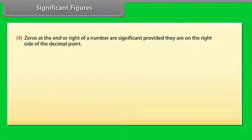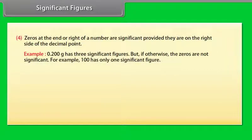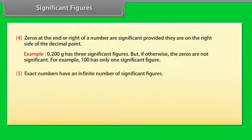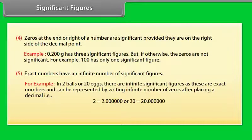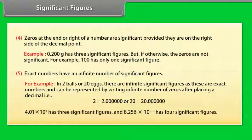Zeros at the end or right of a number are significant provided they are on the right side of the decimal point. Example: 0.200 gram has three significant figures. But if otherwise, the zeros are not significant. For example, 100 has only one significant figure. Exact numbers have an infinite number of significant figures. For example, in two balls or 20 eggs, there are infinite significant figures as these are exact numbers and can be represented by writing infinite number of zeros after placing a decimal. That is, 2 = 2.0000 or 20 = 20.0000. 4.01 × 10^2 has three significant figures and 8.256 × 10^-3 has four significant figures.